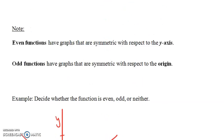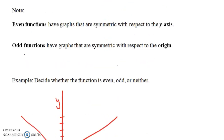One nice thing about even and odd functions is that we can tell based on a graph whether a function is even or odd pretty easily. Even functions have graphs that are symmetric with respect to the y-axis. In fact, that's an if and only if statement: a function will be even if and only if its graph is symmetric with respect to the y-axis.